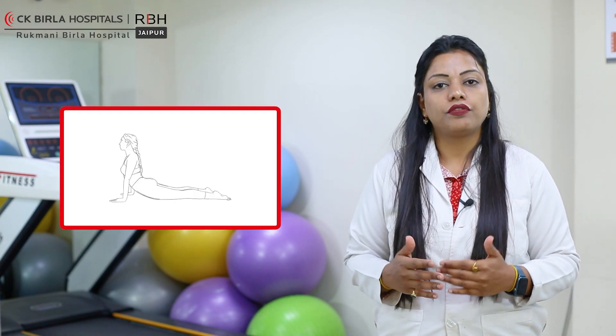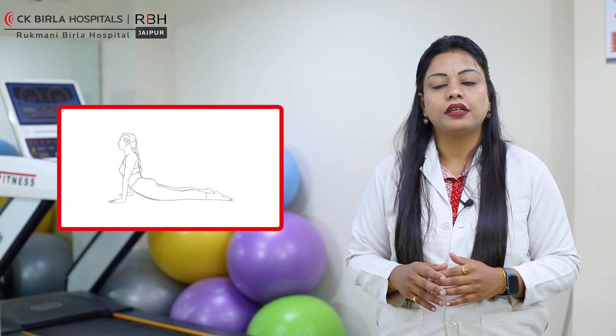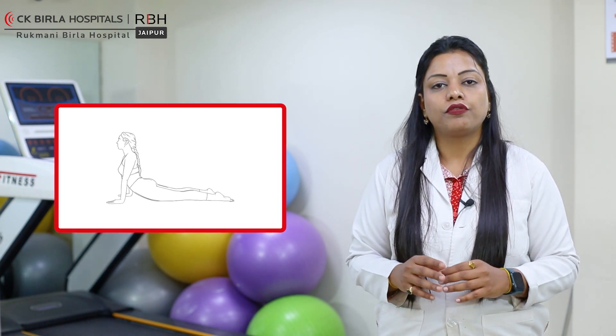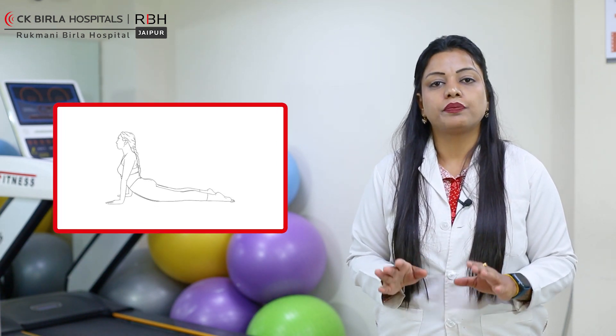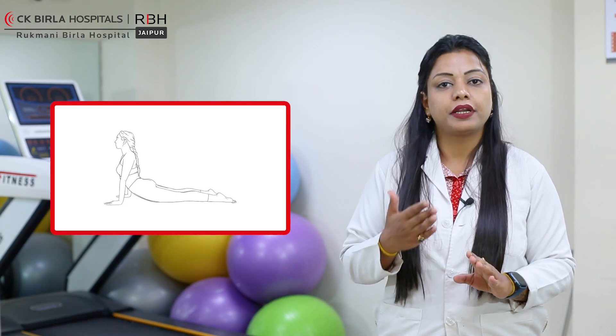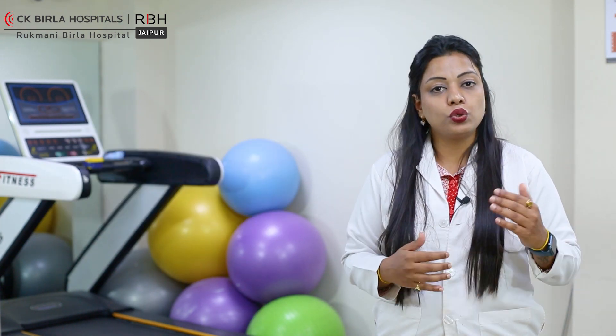For disc problems, you can also do the extensor regime exercise, commonly known as cobra pose. Lie with your chest on the bed in a prone position, then simply take your upper body up with the help of your elbows in an upright position and hold it for a while.